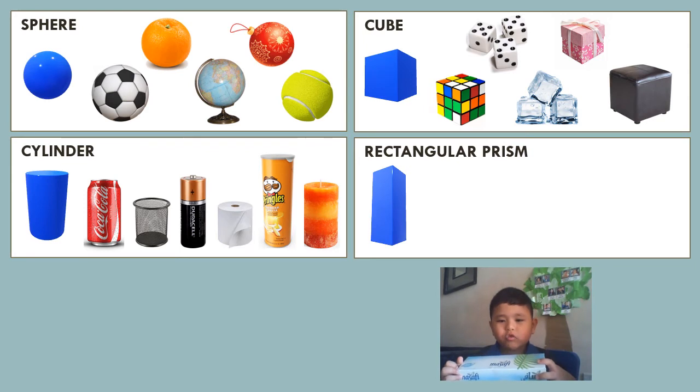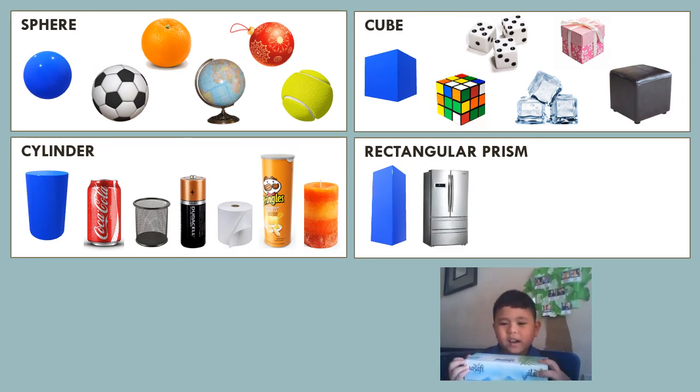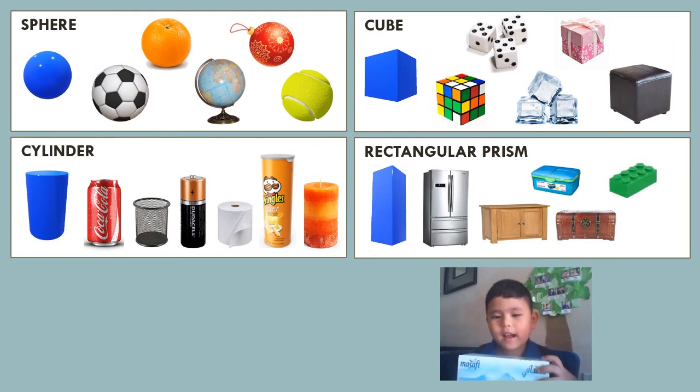The next 3D shape is the rectangular prism. It is like six faces that are rectangles. We see this shape all around us, from the buildings, the cabinets, refrigerators, treasure chests, and boxes.